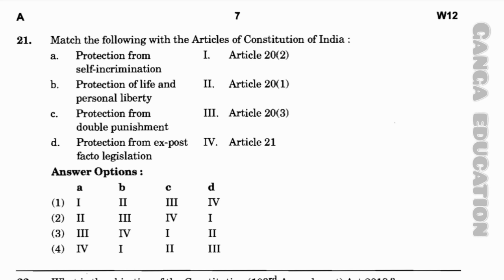The correct answer for Question 21 is: A — protection from self-incrimination = Article 20 Clause 3; B — protection of life and personal liberty = Article 21; C — protection from double punishment = Article 20 Clause 2; D — protection from ex post facto legislation = Article 20 Clause 1.